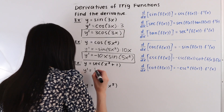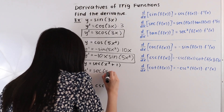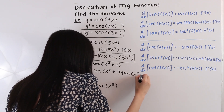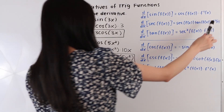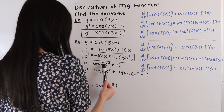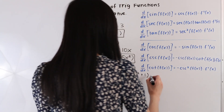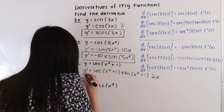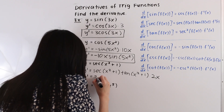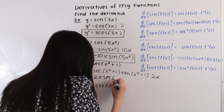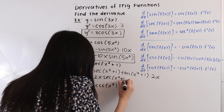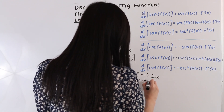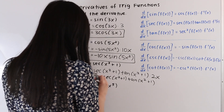And we're going to keep the angle the same. So we have secant of x squared plus 1 times tangent of x squared plus 1. And then we're going to multiply by the derivative of our angle. So the derivative of x squared plus 1 is equal to 2x. And as our last step, let's go ahead and move this 2x out in front. So we have y prime is equal to 2x times secant of x squared plus 1 times tangent of x squared plus 1.